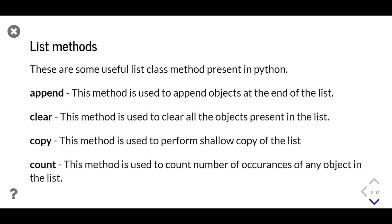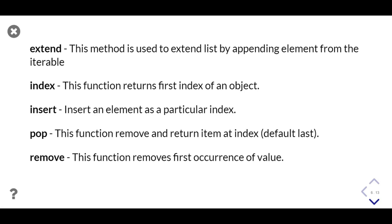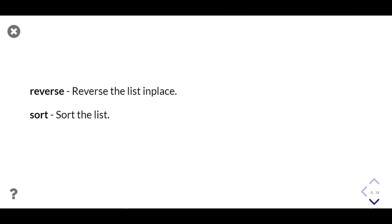Here are some important list class methods. `append` adds a single object to the end of the list. `clear` removes all objects from the list. `copy` performs a shallow copy of the list. `count` counts the number of occurrences of any object in the list. `extend` extends the list by appending elements from an iterable — we'll see the difference between `extend` and `append` shortly. `index` finds the first index of a given object. `insert` adds an element at a particular index. `pop` removes and returns an element. `remove` removes the first occurrence of an element. `reverse` performs an in-place reversal. `sort` sorts the list in ascending or descending order, or by a custom key.